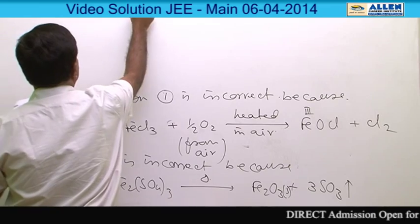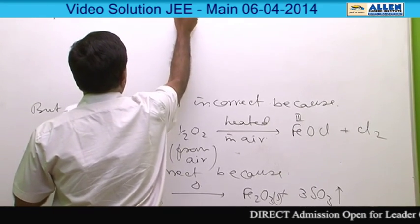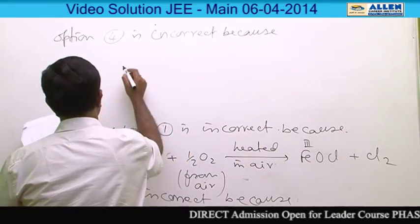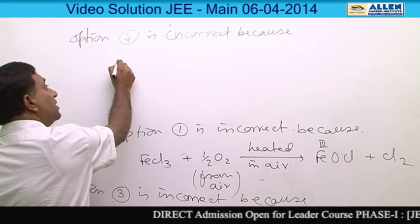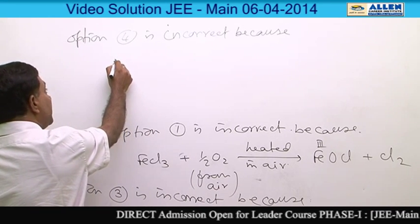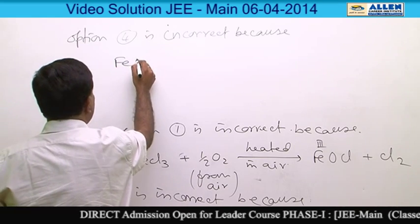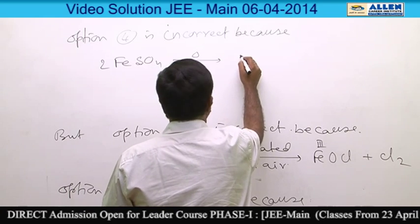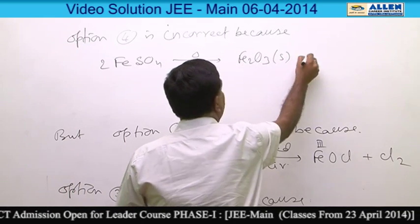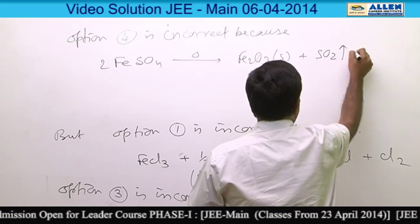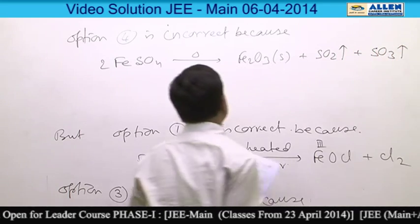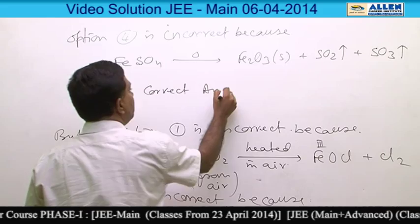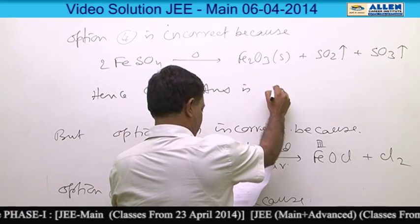Option 4 is also incorrect because the product of heating FeSO4 given is again incorrect. The correct heating product of FeSO4 is Fe2O3 (solid) plus SO2 (gas) plus SO3 (gas). Hence, the correct answer is 2.